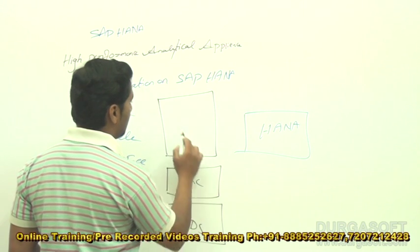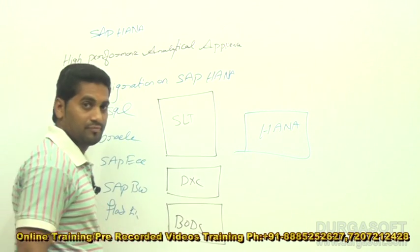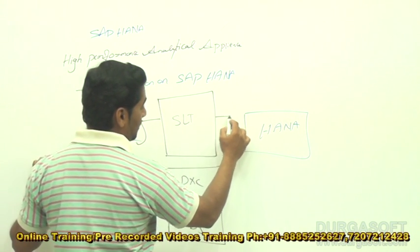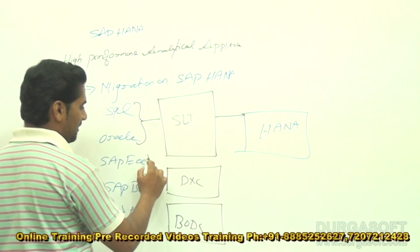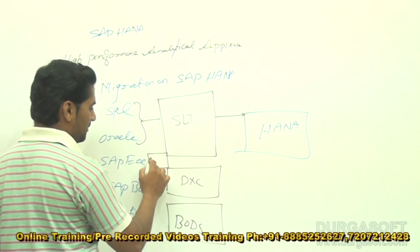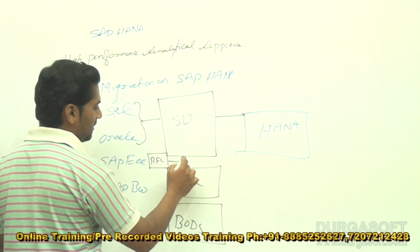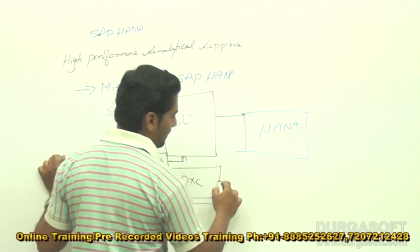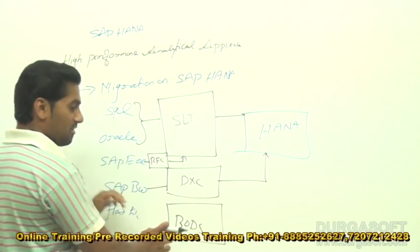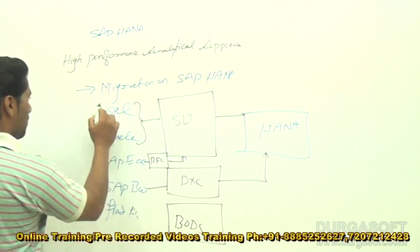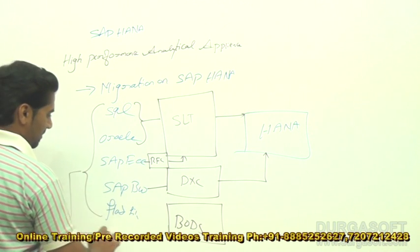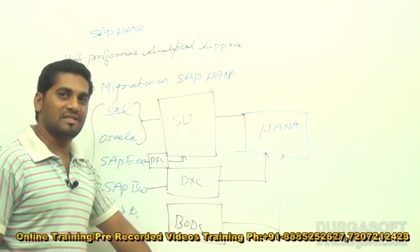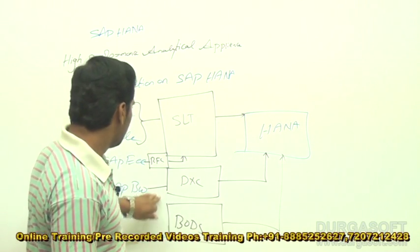Non-SAP systems will support SLT directly. For SAP ECC, we need an RFC (Remote Function Call) connection to connect to SLT. For BW, we connect through DXC. BODS is an ETL tool that supports all these systems and connects to the SAP HANA database.